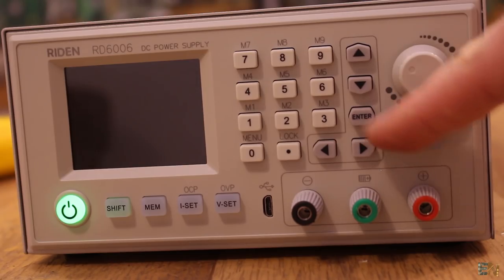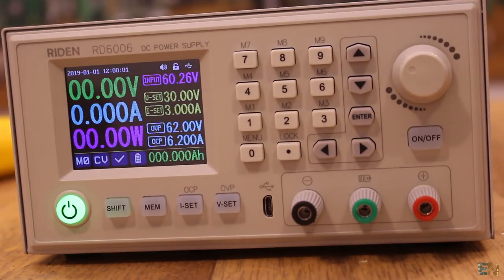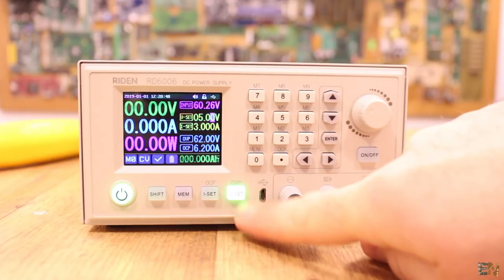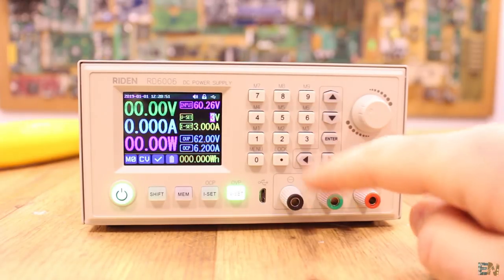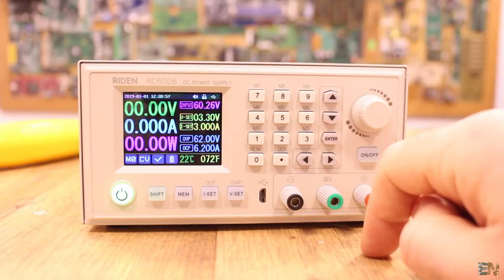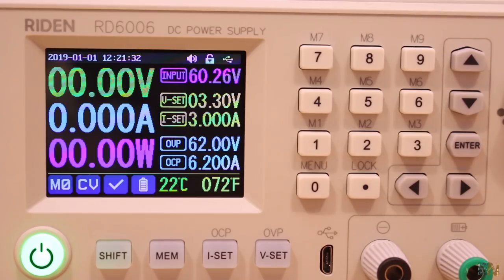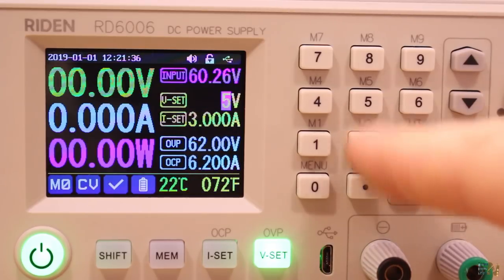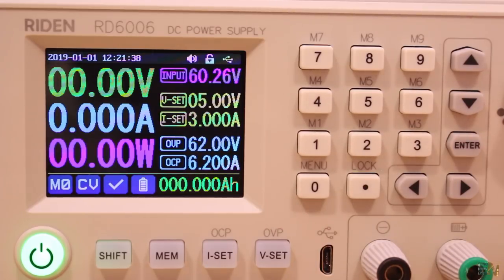But before we make some tests, let's see how to control it. This is quite easy. To set the voltage, just press the VSET button and then you have to type the voltage using the numbers. For example, I type 3.3 and then I press enter. Now the voltage is set to 3.3V. Now I type 5 and then enter, and the voltage is now 5V. So you get how this works.